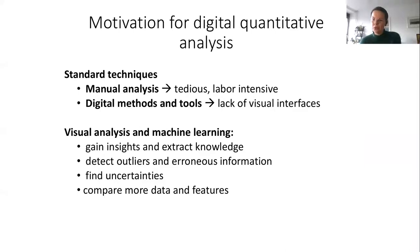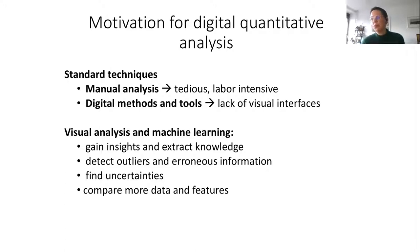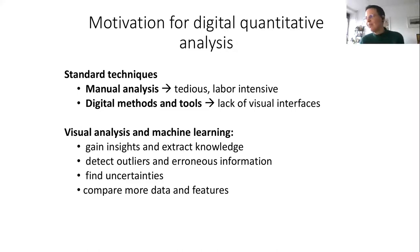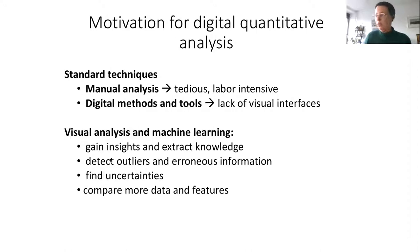Most projects are more on the qualitative analysis side, not looking at huge amounts of manuscript data because they are very computing-intensive. Extracting single features, segmenting, and analyzing them is tedious, labor-intensive, and time-intensive. Many tools also lack visual interfaces, which is important for humanities scholars and digital humanists who are not code-literate. With visual analysis and machine learning, you can gain insights, extract knowledge, detect outliers and erroneous information, find uncertainties, and compare more data and features than with manual analysis.